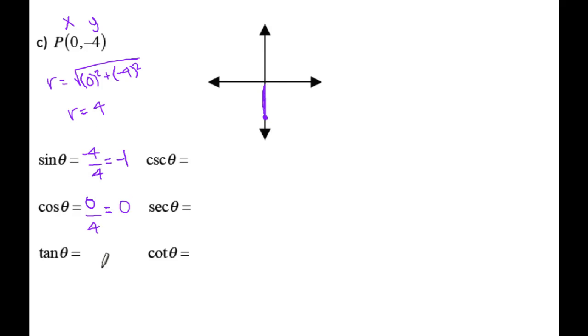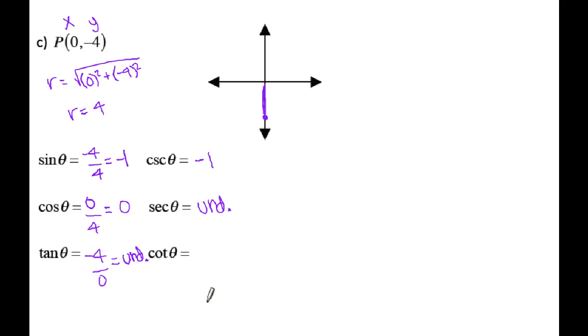Tangent is y over x: negative 4 over 0. You can never divide by 0, so tangent is undefined. Cosecant is the reciprocal of sine, so that's negative 1. Secant would be the reciprocal of 0, which means dividing by 0 — so that is undefined. Cotangent: if I flip over the original ratio for tangent, that gives me 0 over negative 4, which is just 0. So if one trig function is 0, its reciprocal trig function is undefined, and vice versa.